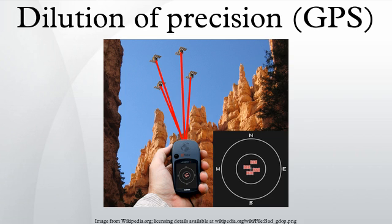The concept of dilution of precision originated with users of the Lorentz-C navigation system. The idea of geometric DOP is to state how errors in the measurement will affect the final state estimation. Ideally, small changes in the measured data will not result in large changes in output location, as such a result would indicate the solution is very sensitive to errors.